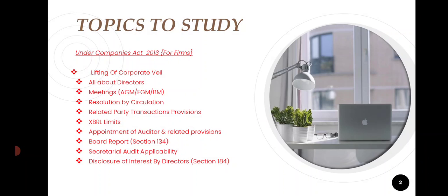Next comes the meeting provisions. Then, resolution by circulation, that is Section 175. Later, related party transactions, XBRL limits, appointment of auditor, and related provisions. Then board report, secretarial audit applicability, and Section 184 — that is disclosure of interest.